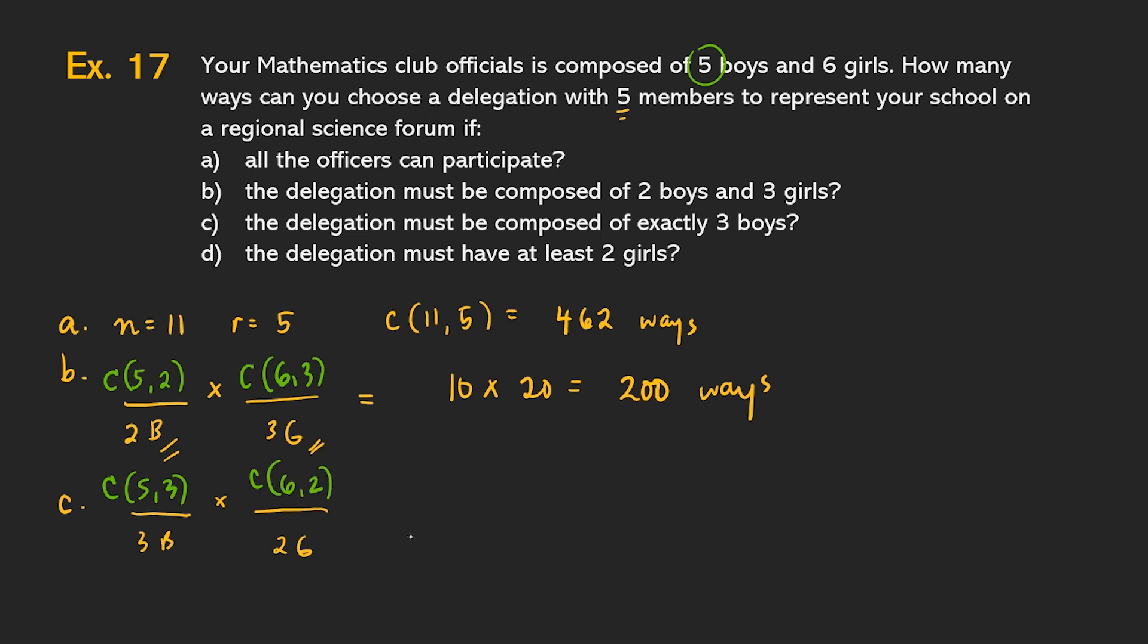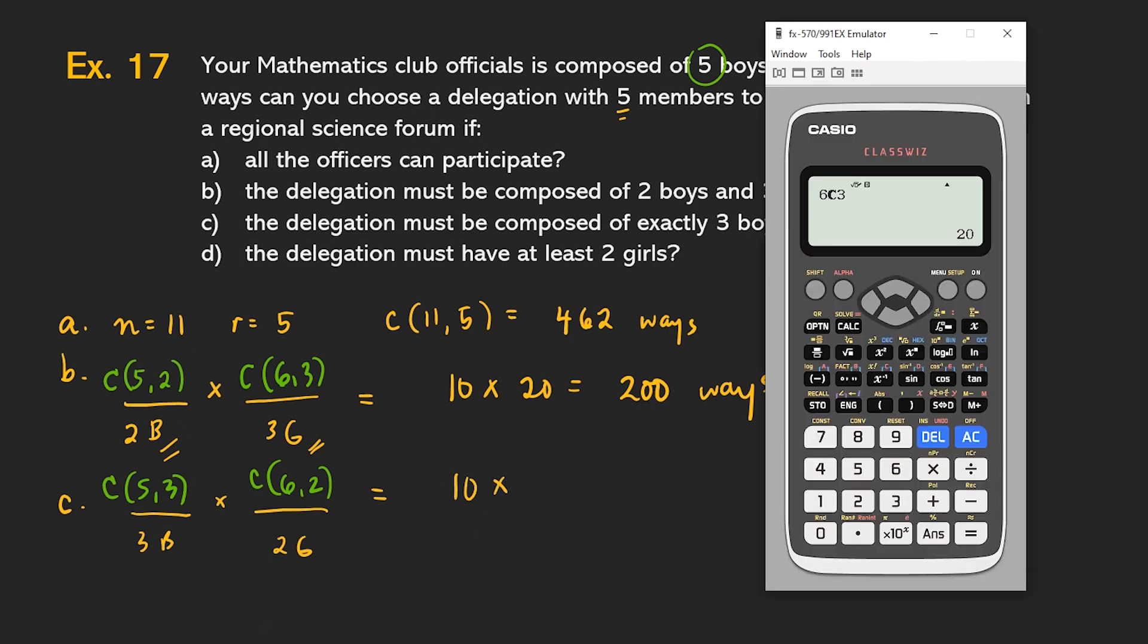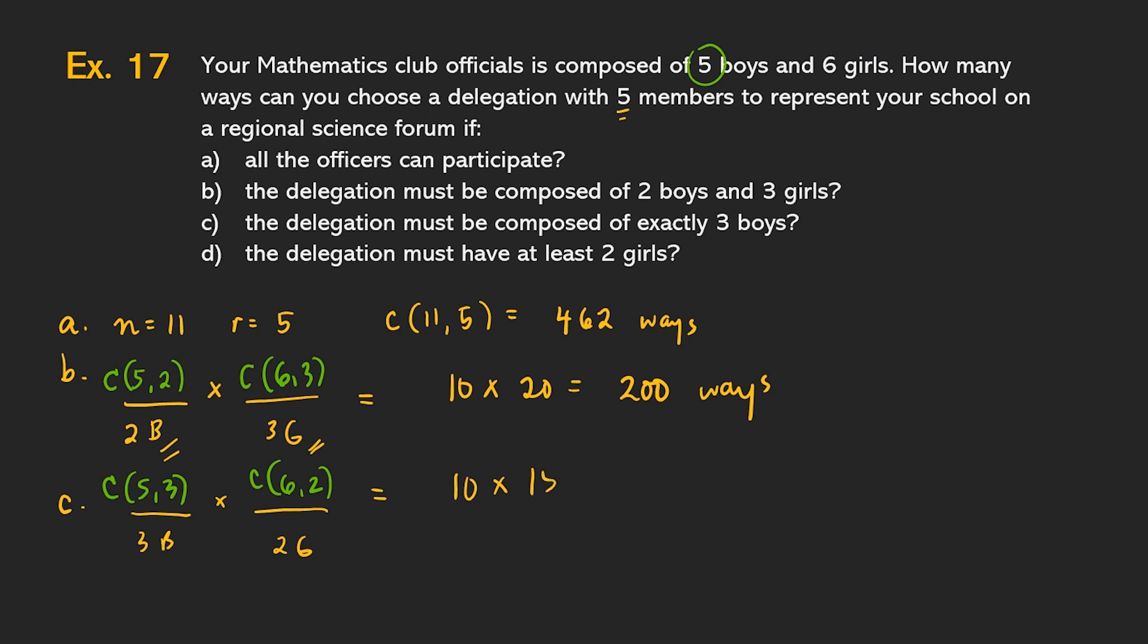Let's compute this. What is five combination three? And this, that's equivalent to ten. You can check that. That's equivalent to ten. Five combination two and five combination three are the same. Check na nga natin. Okay, so it's ten. Six combination two. That's equivalent to fifteen. So, ten times fifteen, that's one hundred fifty ways. Okay.